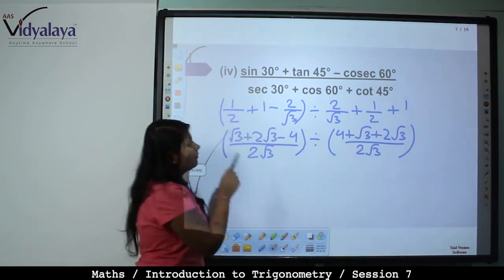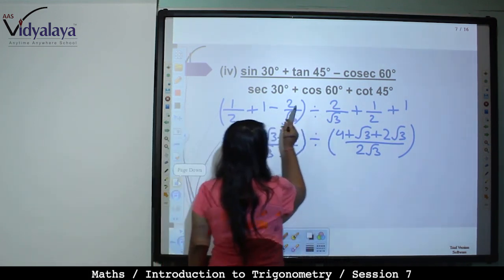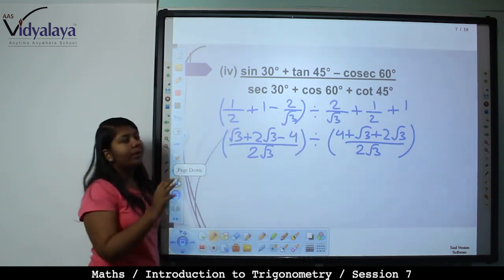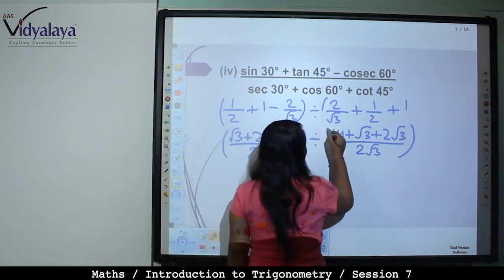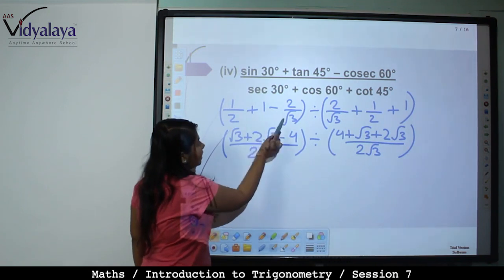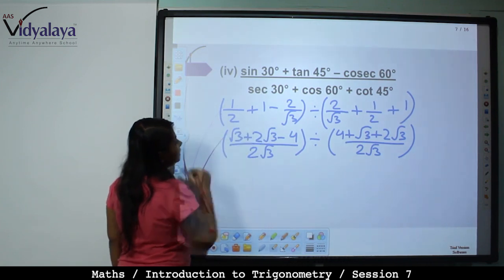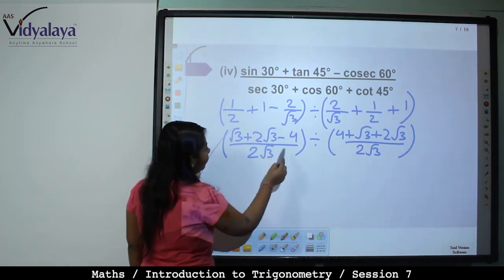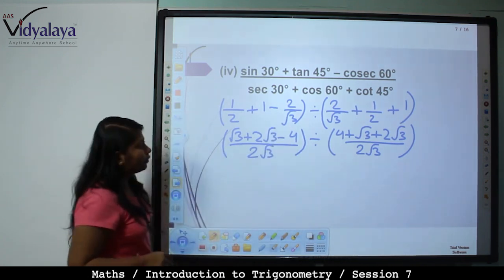Without the bracket it looks like only the last term is divided — that would be wrong. So put brackets around the entire numerator. Take LCM of the numerator: LCM is 2 root 3, denominator is 2 root 3. 2 is already there so multiply by root 3, giving root 3 plus 2 root 3 as it is, minus 4. So the numerator becomes 3 root 3 minus 4 upon 2 root 3.